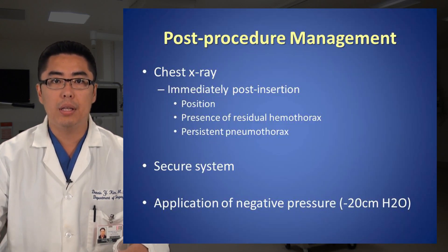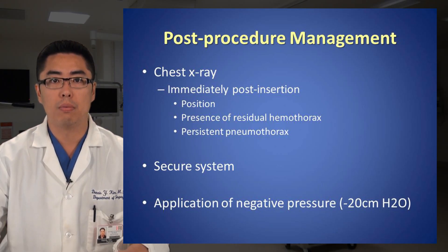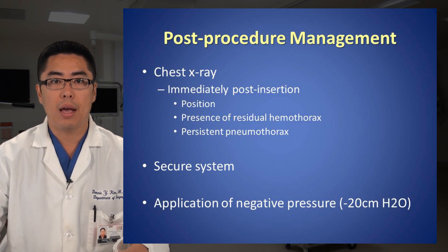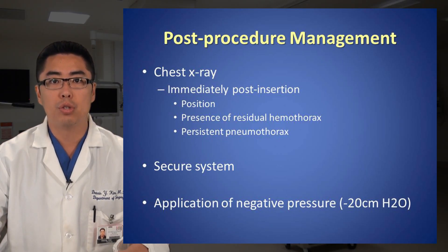Post-procedure management: Immediately following chest tube insertion, a confirmatory chest X-ray should be undertaken. This chest X-ray may demonstrate the position of the tubing, the presence of a residual hemothorax, as well as a persistent pneumothorax. Ideally all holes or fenestrations in the chest tube should be within the pleural cavity. The chest tube together with its drainage collection system should be appropriately secured, and unless otherwise contraindicated, the application of negative pressure — usually at a setting of minus 20 cm of water — should be applied. In patients with a massive air leak, the decision may be made to place the chest tube to straight drainage only.